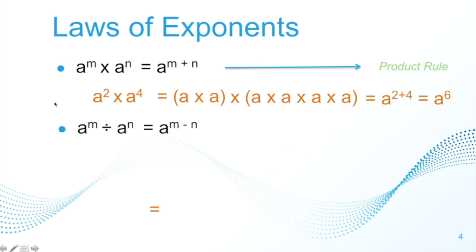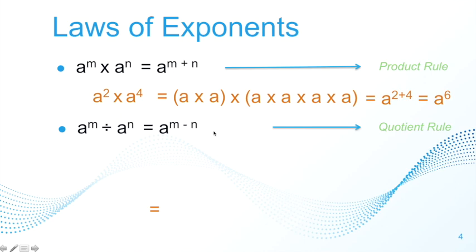The second law is: a to the power of m divided by a to the power of n will give you a to the power of m minus n. In this case, the operation is division, and provided the bases are the same, you can simply subtract the exponents. This is called the quotient rule.